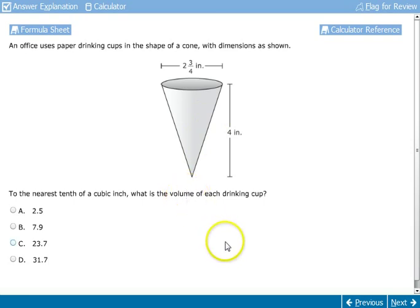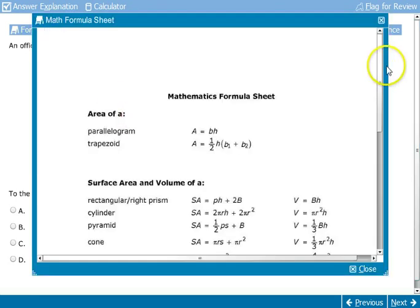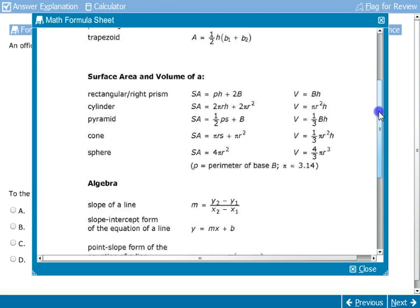And the question is to the nearest tenth of a cubic inch, what is the volume of each drinking cup? So we want to know the volume or how much material can fit inside of this shape. So we're going to look at our formula sheet here. And on the test you can just simply click on that and we go here to cone. And then we see that the volume of a cone is one third pi times r squared times h.